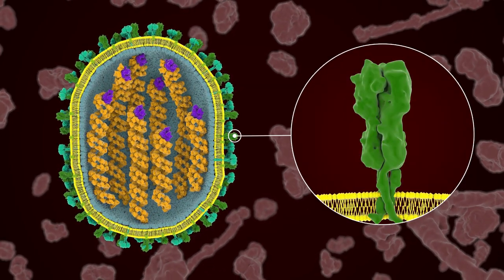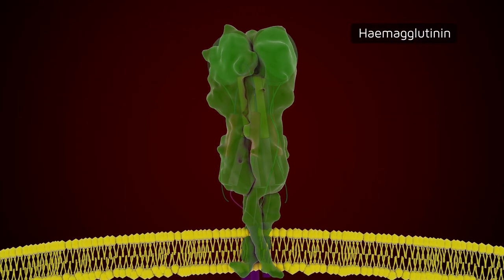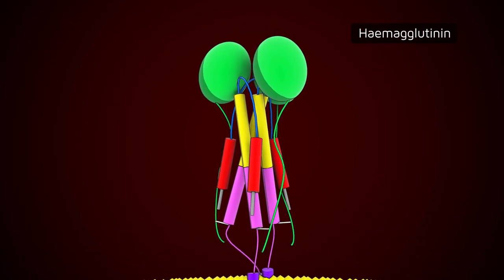Hemagglutinin is an envelope protein located on the surface of this virus. It plays an essential role in viral entry.